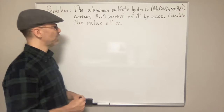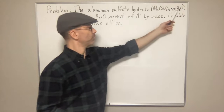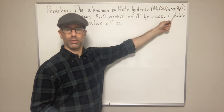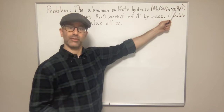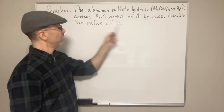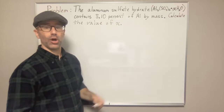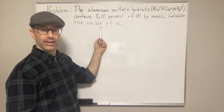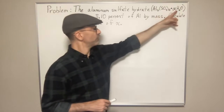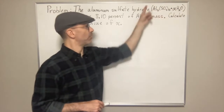In this problem you're given aluminum sulfate hydrate and they give you the formula for the hydrate. You don't know how many water molecules are in this hydrate — that's what you're trying to find. But they do give you the mass percent of the aluminum in the hydrate, and that's going to be very useful. So we can use that to calculate the value of x.